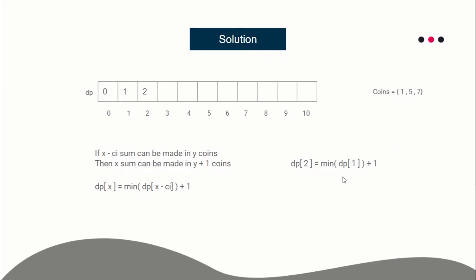For dp[2]: dp[1] + 1 = 2, so dp[2] = 2 — you can make sum 2 using two coins of value 1. Similarly, dp[3] and dp[4] follow the same pattern. For dp[5]: we consider dp[4] and dp[0]. The minimum of dp[4]=4 and dp[0]=0 is 0, so dp[5] = 0 + 1 = 1. Take the empty set, insert 5, and you get a set with sum 5. This shows how we fill the DP array using previously calculated values.